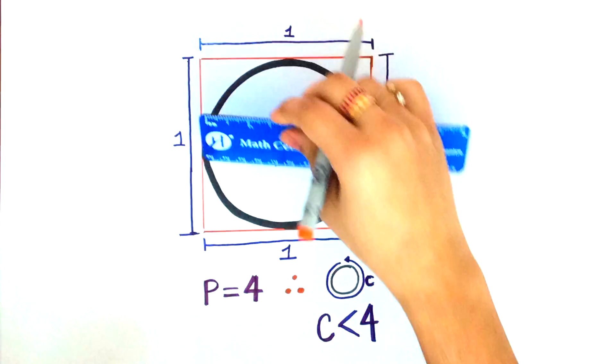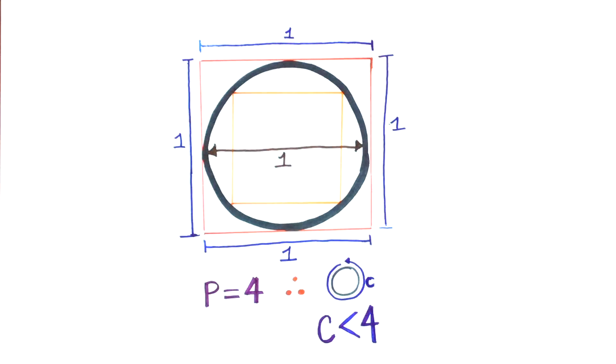Next, let's inscribe another square inside the circle. Clearly, the circumference of this circle is greater than the perimeter of the square.